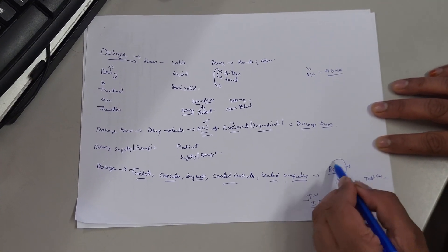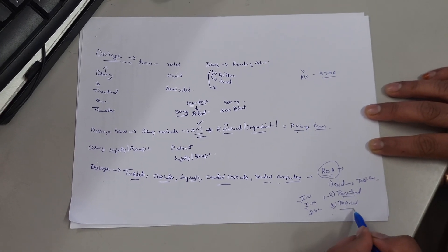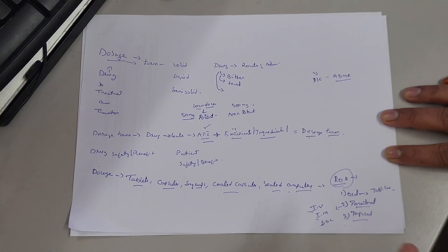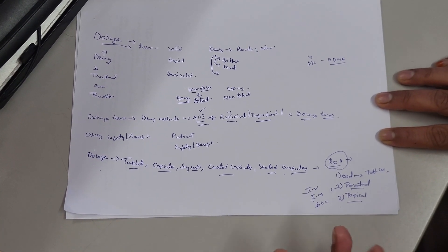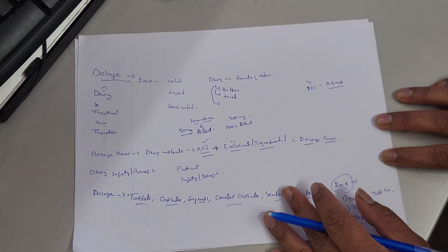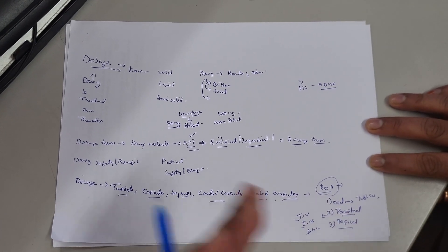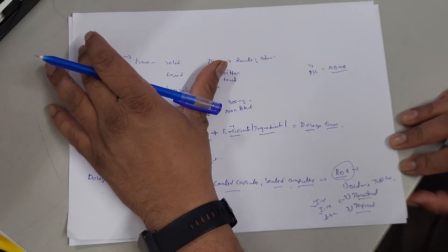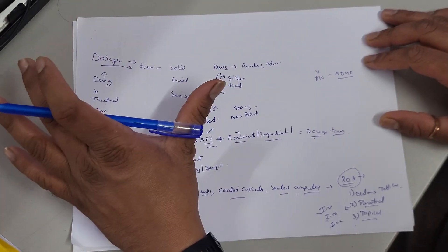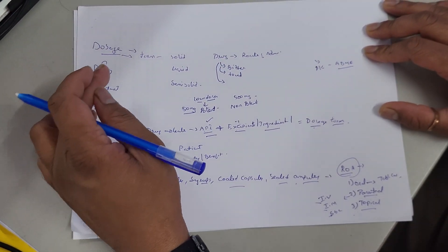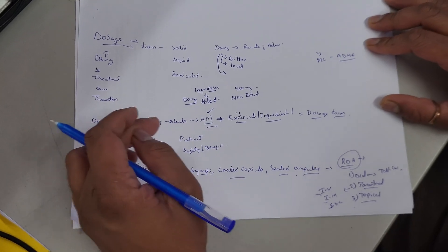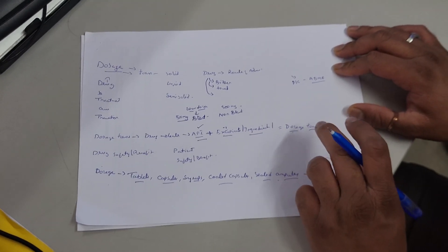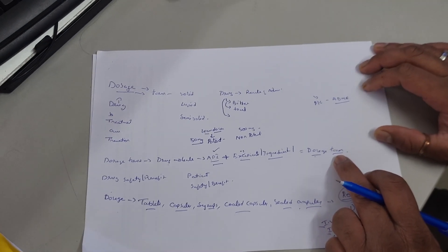The topical route involves semi-solid preparations. Other dosage forms include suspensions, solutions, and emulsions. I will explain the classification of dosage forms clearly — what is a dosage form, what is a drug, what is the API, what are the excipients, and how drugs are converted into dosage forms.